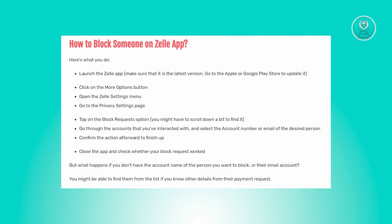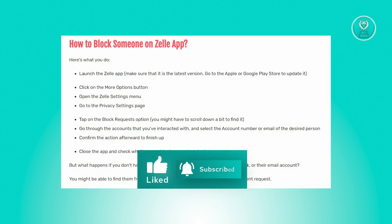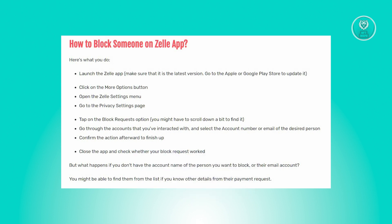Now from here, select the More Options button and access the Zelle Settings menu and navigate to the Privacy Settings page. Locate and tap on the Block Request option, scroll down if necessary, and identify the desired person by their account number or email among the accounts you've interacted with.